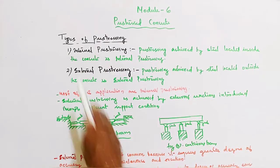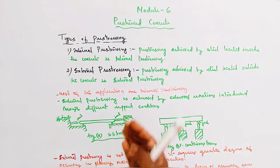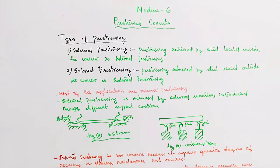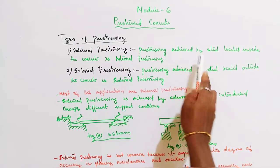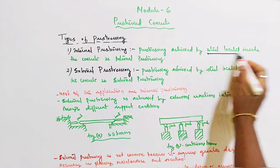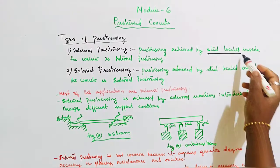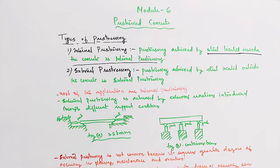Types of Pre-Stressing. First one is Internal Pre-Stressing, and second is External Pre-Stressing. Internal Pre-Stressing is achieved by steel located inside the concrete.